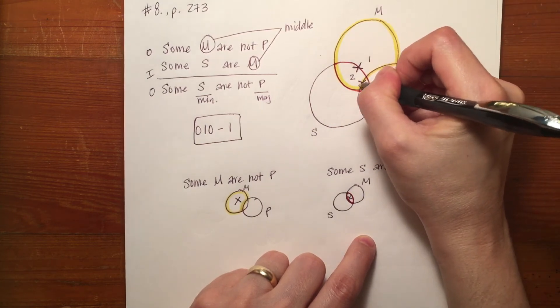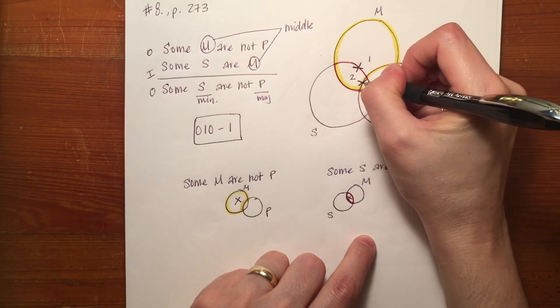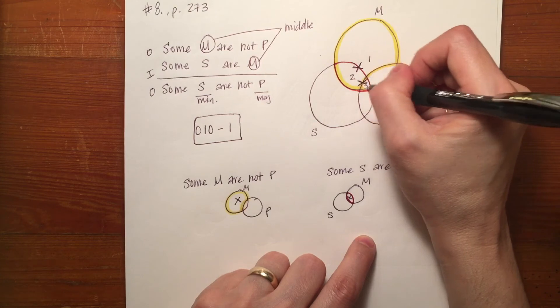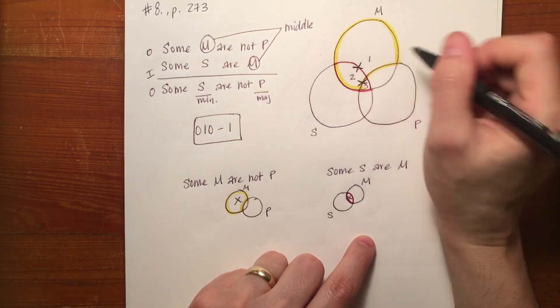I'm going to put my X on the line of the circle that I'm not working with. The one, the line that divides these two parts of the area.